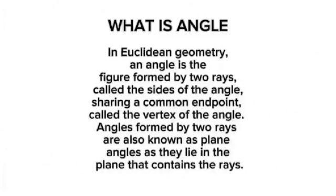In Euclidean geometry, an angle is a figure formed by two rays, called the sides of the angle, sharing a common endpoint, called the vertex of the angle. Angles formed by two rays are also known as plane angles, as they lie in the plane that contains the rays.